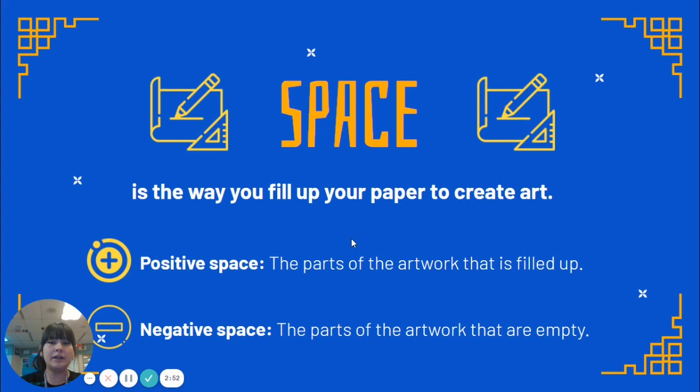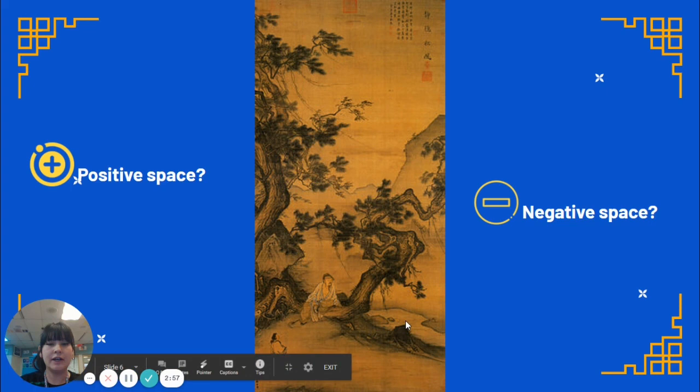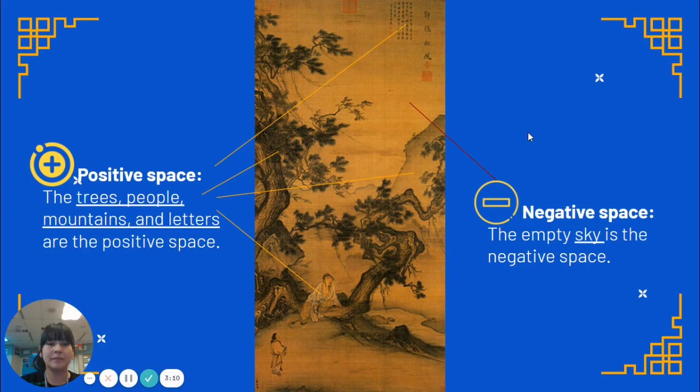So if we look at this traditional Chinese painting, which part do you think is the positive space — the space that is filled in? What part do you think is the negative space? Which parts look empty? The positive space is the tree, the people, mountains, letters — anything that is filled up. The negative space is the sky where it's empty; there's really not a lot going on there. So there's two different types of space: the filled-in positive space and the empty negative space.